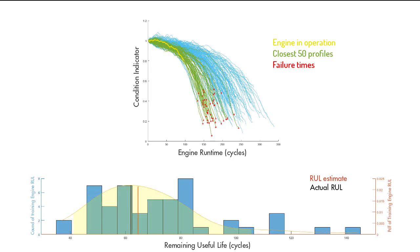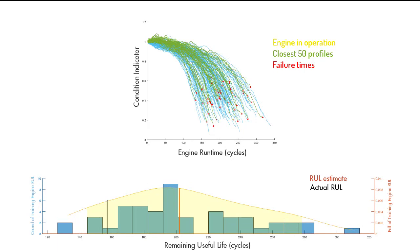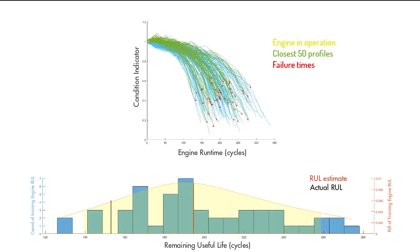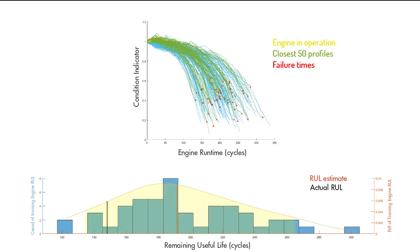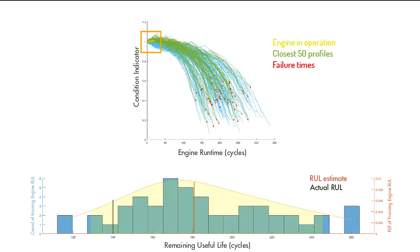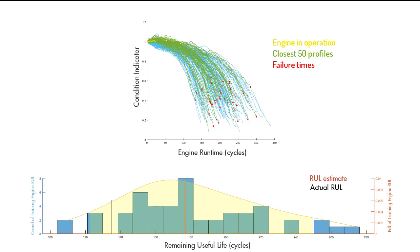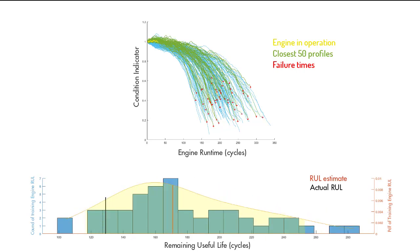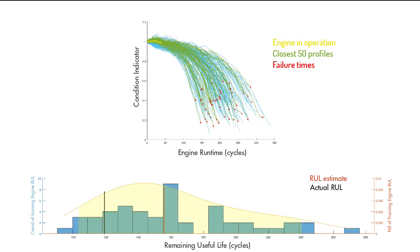If we rewind to the beginning of the animation, we see that the data fed to the model from our engine is only this much and the prediction is 40 cycles off from the true value. And on the upper plot, we see that the closest paths are widely distributed. However, as we get new data from our engine, we train the similarity model with a larger set of data.